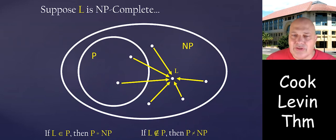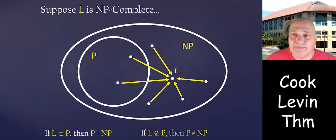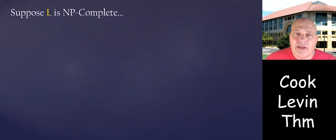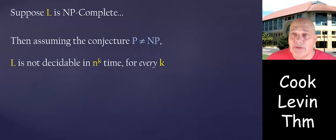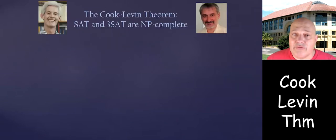If L is not in P, then P is not equal to NP. So L is in P if and only if P equals NP. Suppose L is NP-complete; assuming the conjecture that P is different than NP, L is not decidable in any polynomial time — any time n to the k for every k.